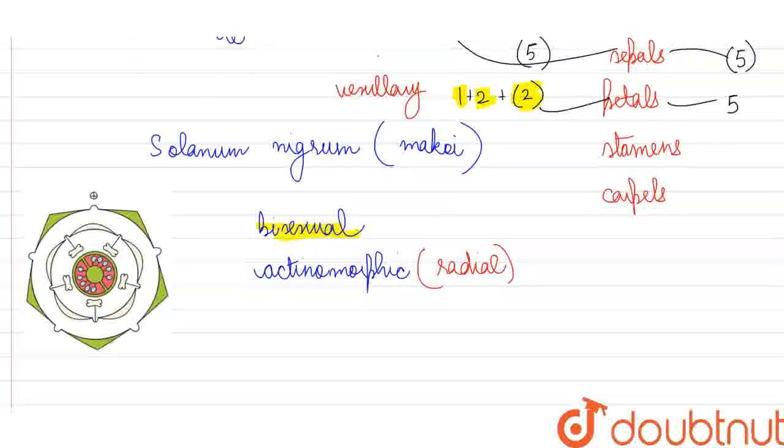When we talk about the androecium or the stamens, in case of our pea plant, we will see that there are total 10 stamens, but they are in nine plus one condition. That is, diadelphous condition. Total there are 10, but they are in the form of two bundles. Nine are forming one bundle, and one is separate.